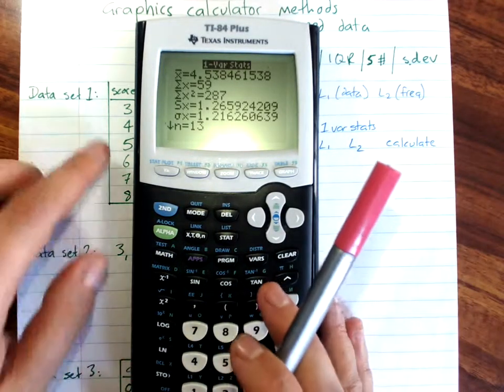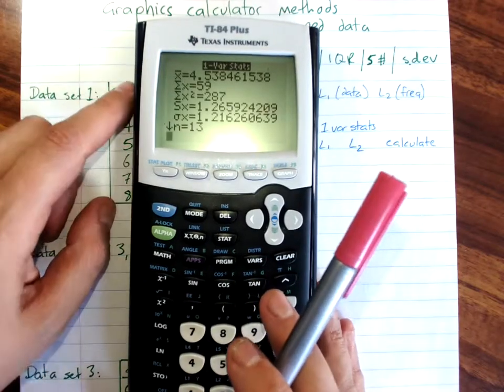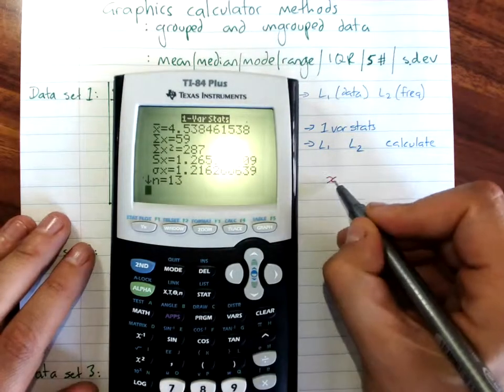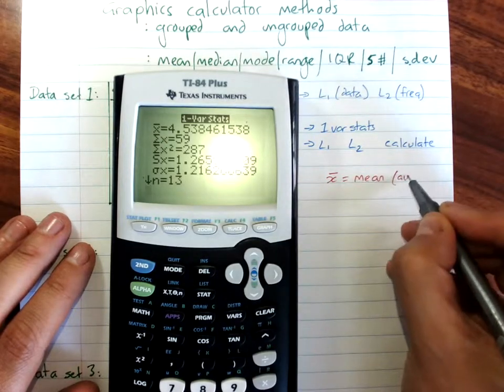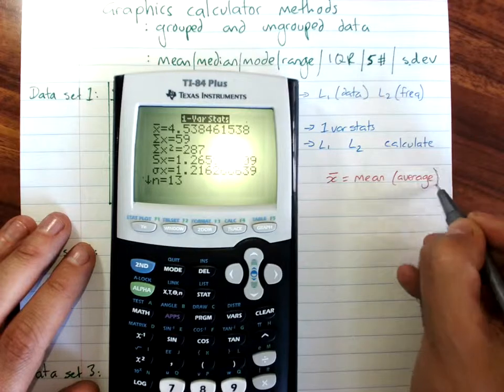So we'll just list the ones that you're going to want and need. The very top one, x bar, is your mean, or your average. You really want that.